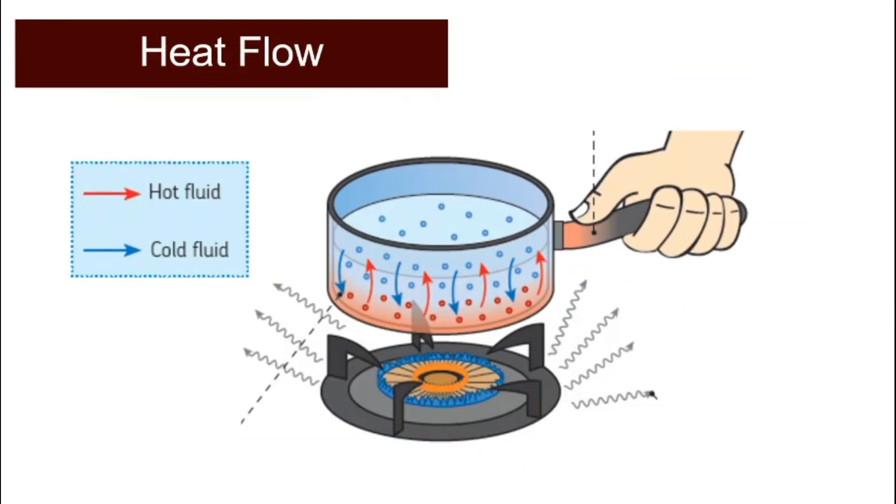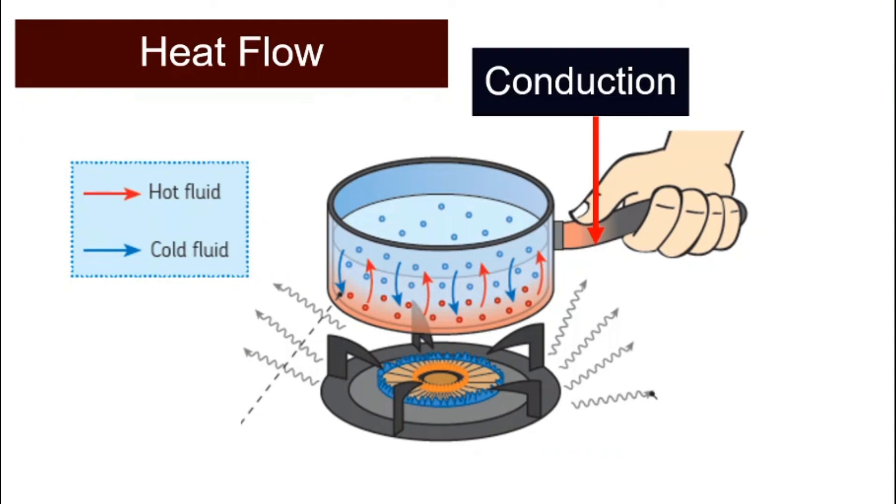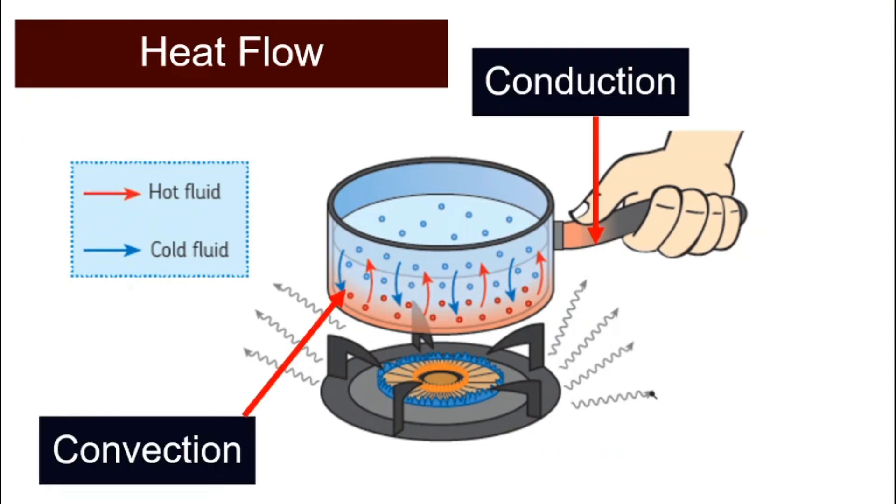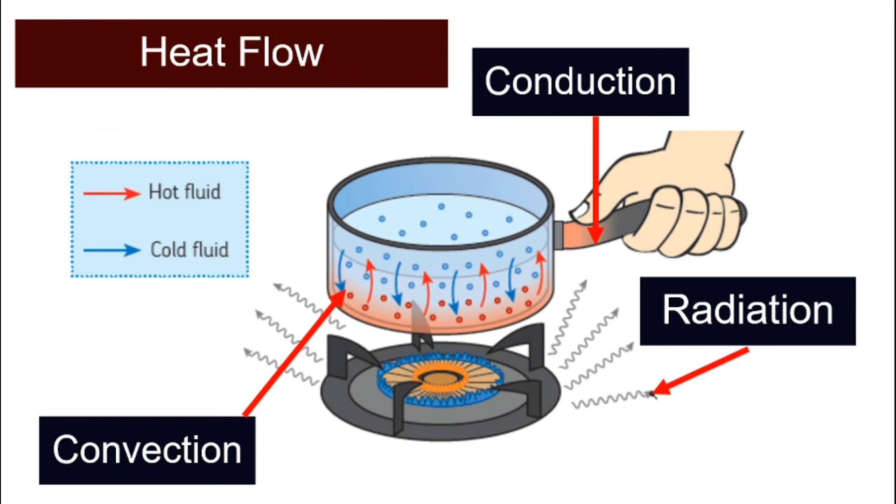So summary, conduction, convection, and radiation are three different ways that heat can flow. And for conduction, it happens in solid. Convection happens in liquid or gas. Radiation does not need any medium.